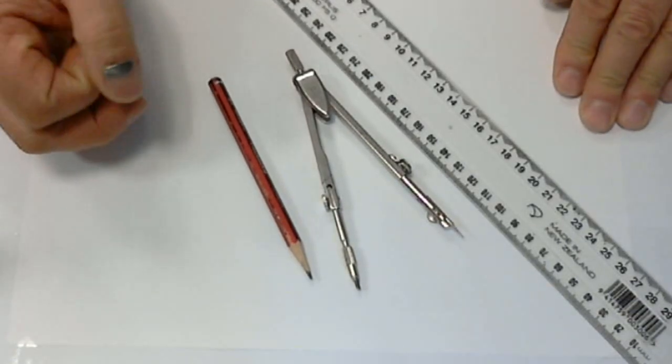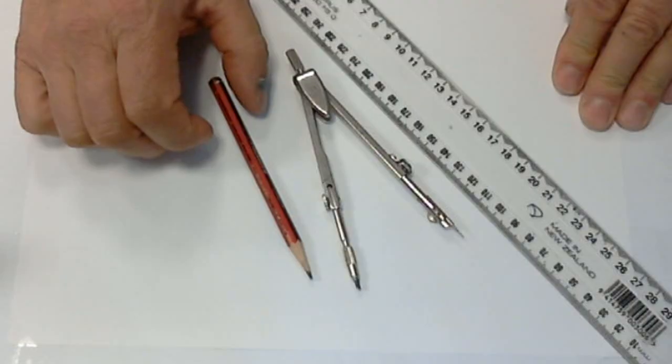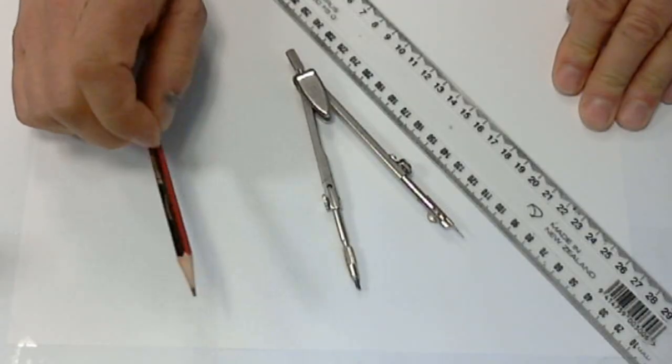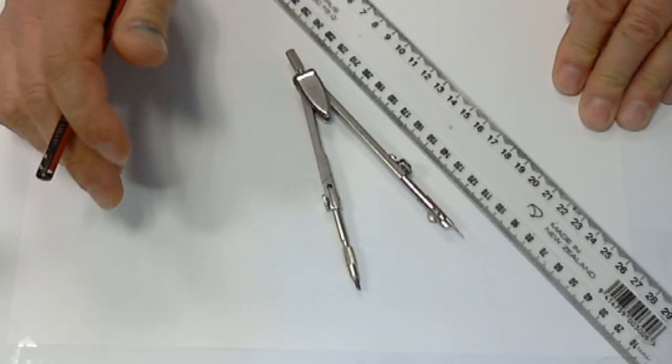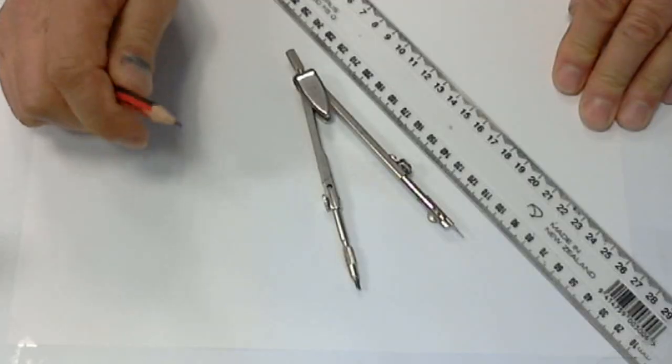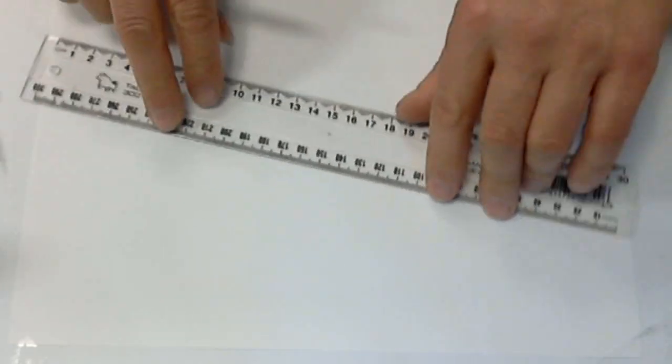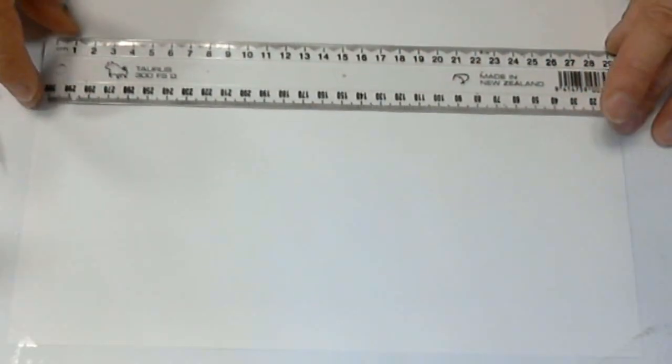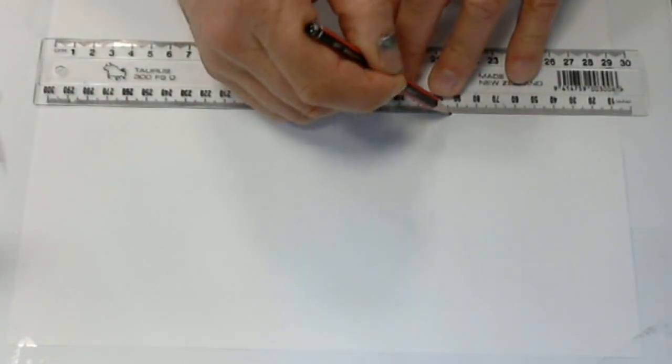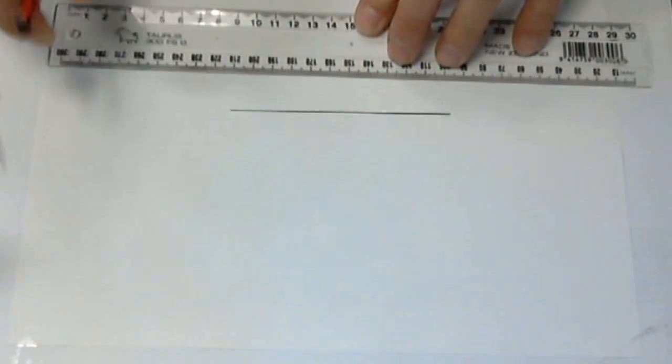This is a short video on how to create a 60-degree angle by construction and then bisect that angle to find two 30-degree angles. To start, we create our initial line, and with our compass set to any setting that will cut this line, draw an arc.